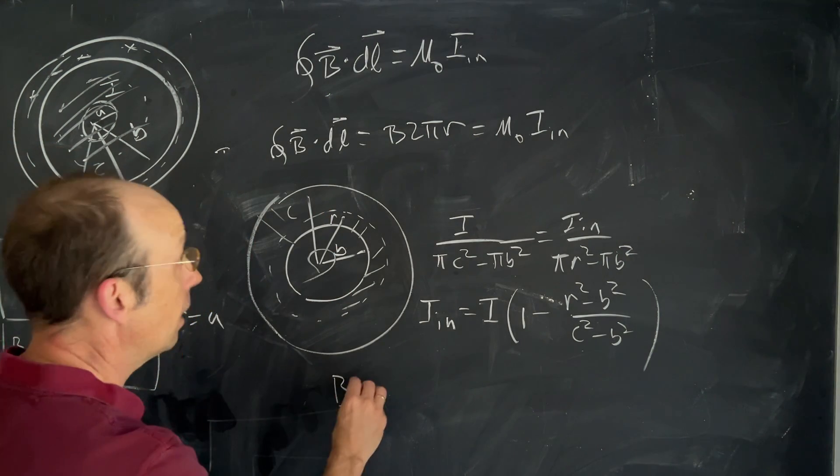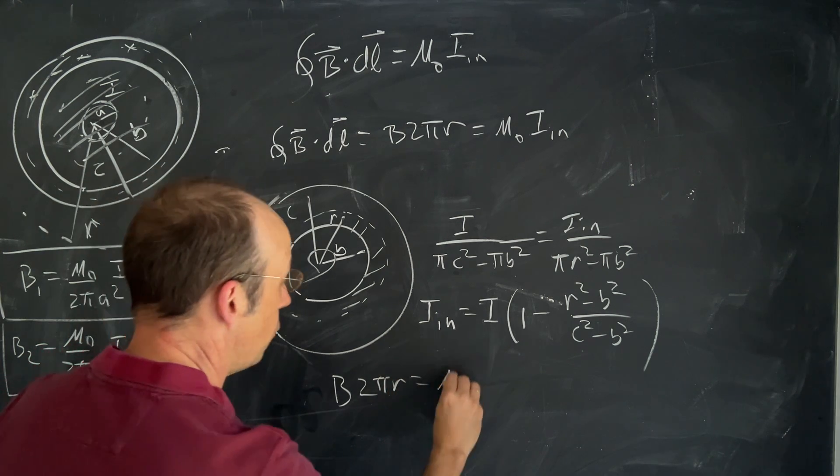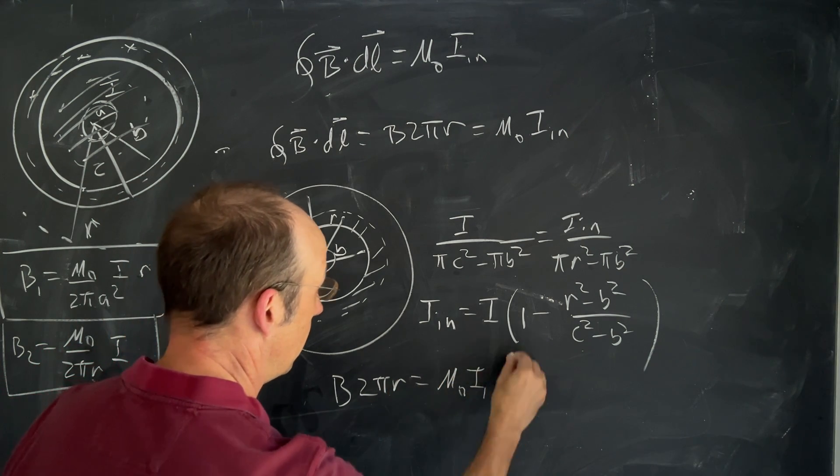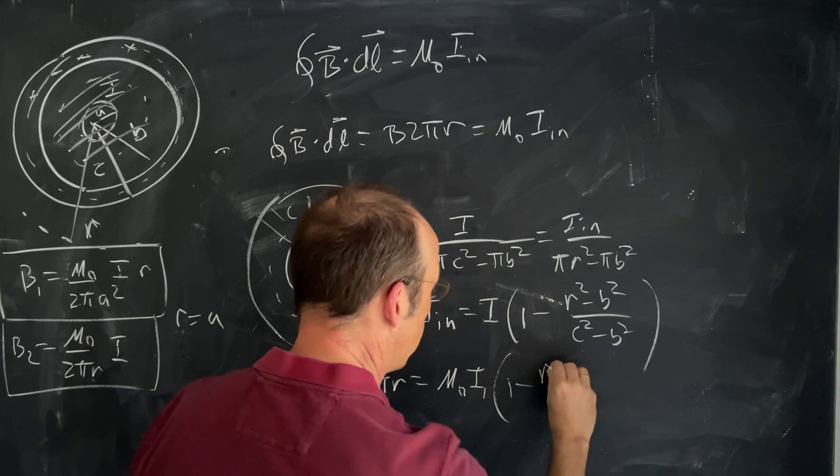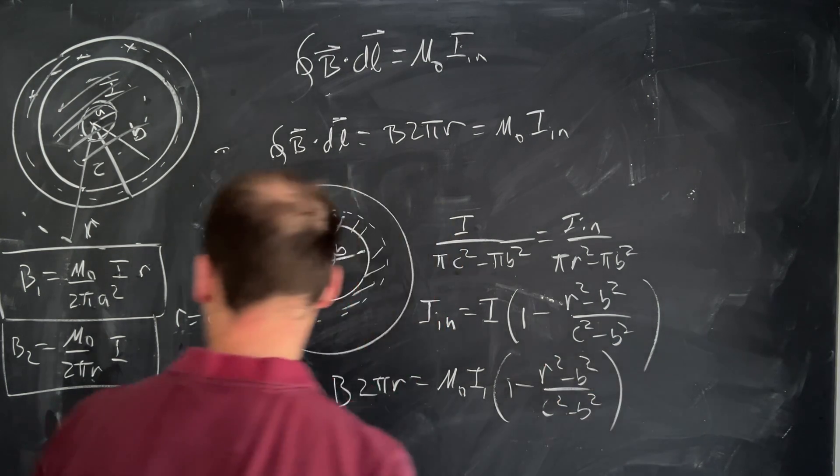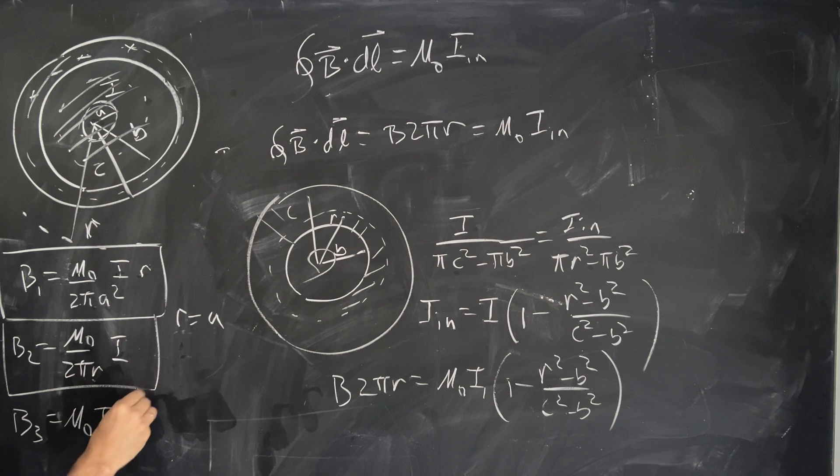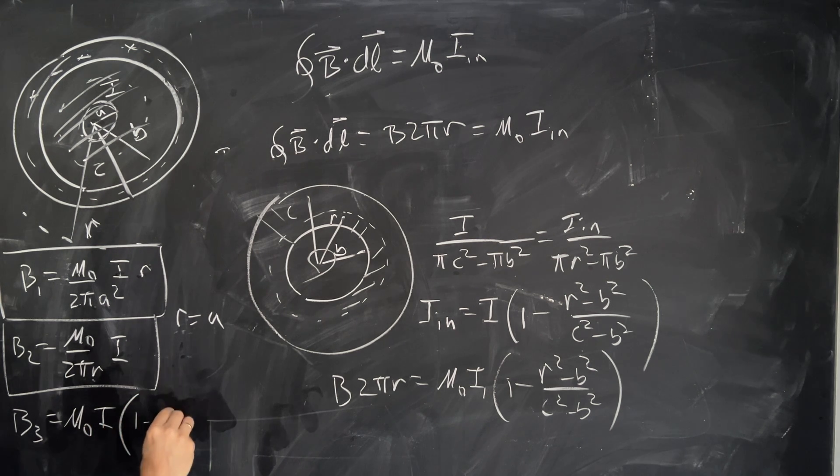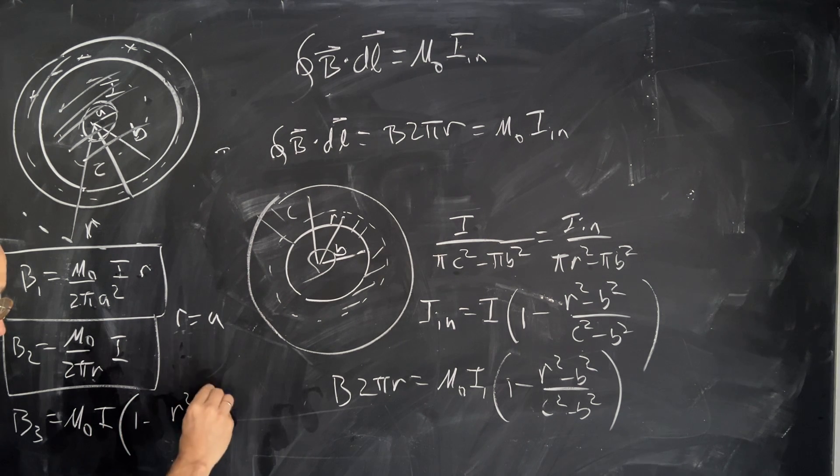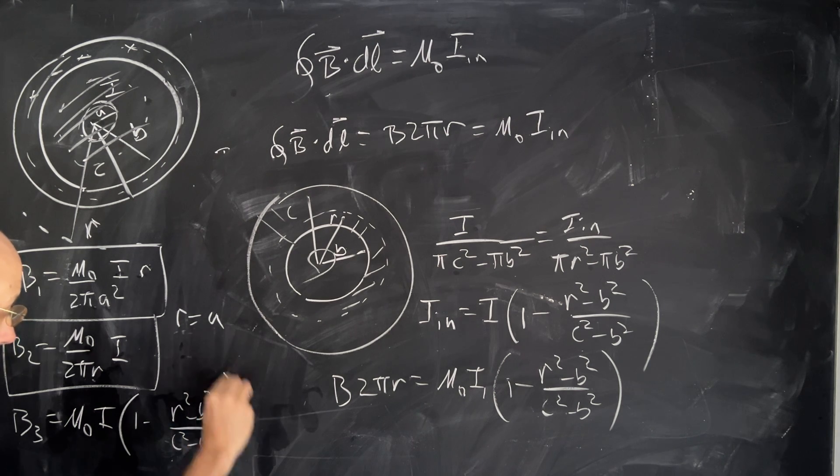And if I put that in over here, I get B 2πR equals μ₀I[1 - (R² - B²)/(C² - B²)]. And that goes over here. Why am I rewriting this? I don't know. One minus (R² - B²)/(C² - B²).